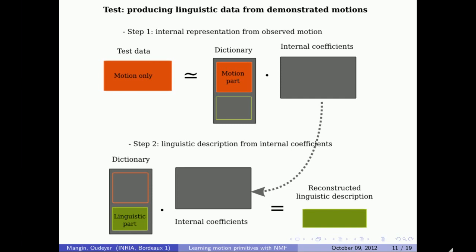In our task, we want to reconstruct a linguistic description associated to a motion demonstration. We proceed in two steps: first, the motion is transformed into an internal representation using only the motion part of the dictionary. Then, from this internal representation, the system reconstructs a linguistic description using the linguistic part of the dictionary.